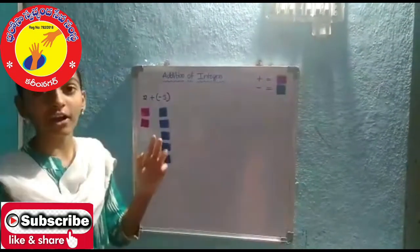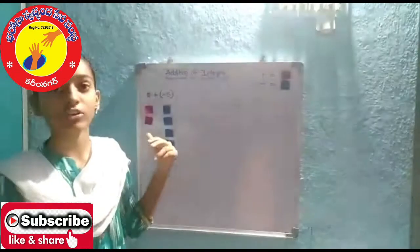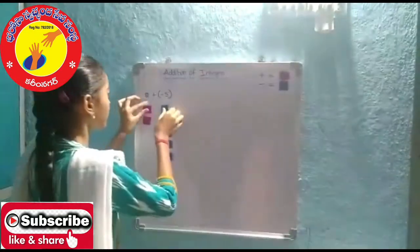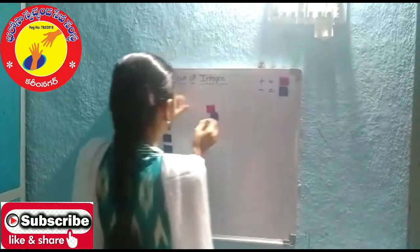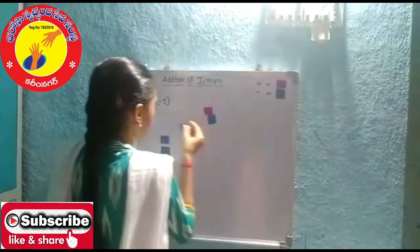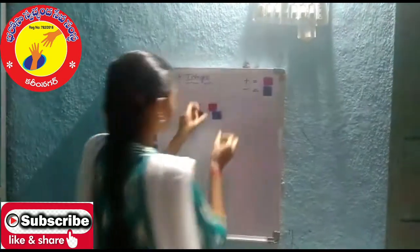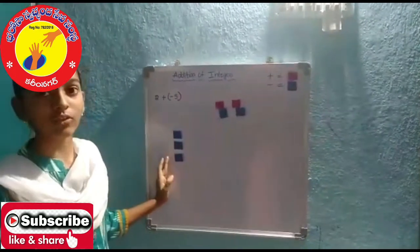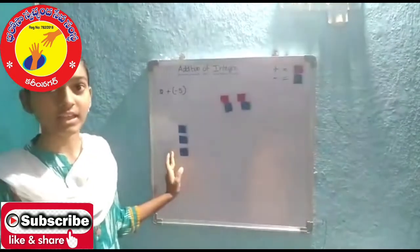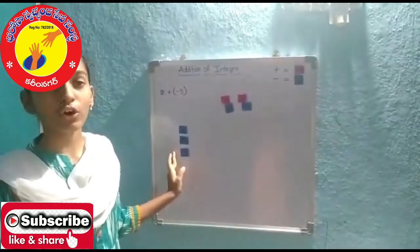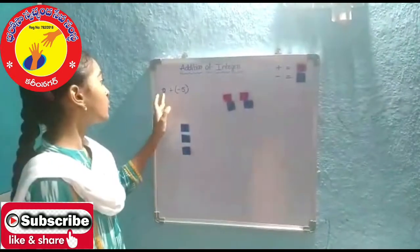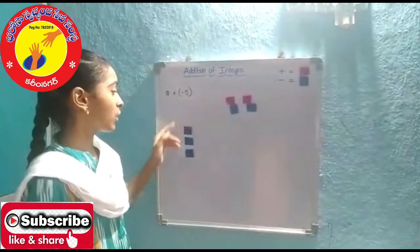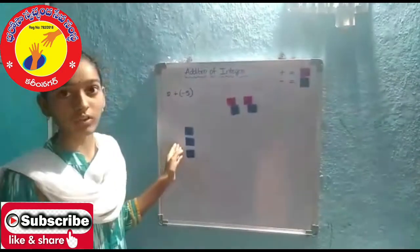We have to take out zeros. Here negative 3 is left with us, so 2 plus negative 5 equals negative 3.